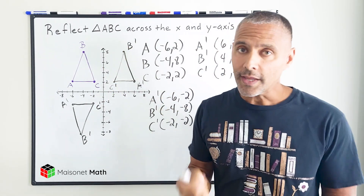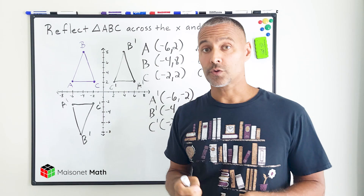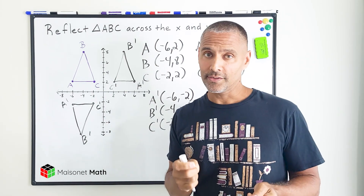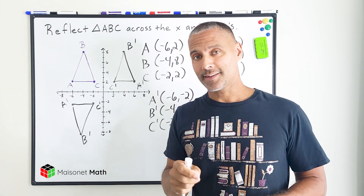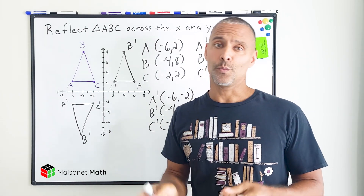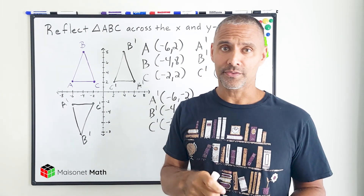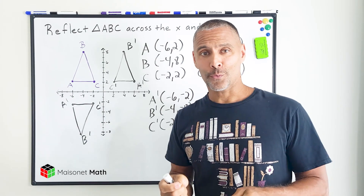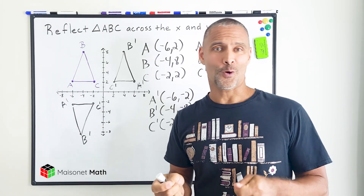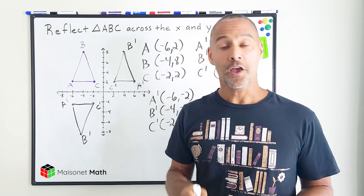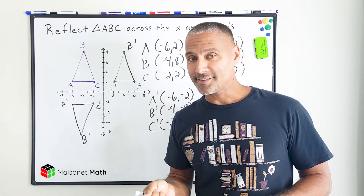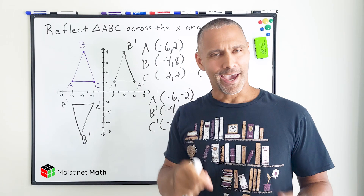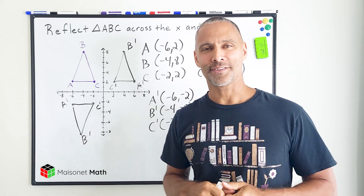So when reflecting an object across the x-axis, the x's stay the same and the y's become opposite. And the opposite is true for reflections across the y-axis — the y's stay the same and the x's become opposite.